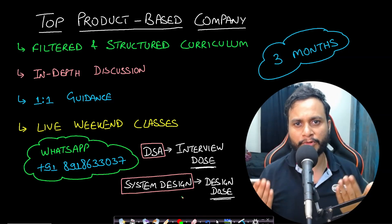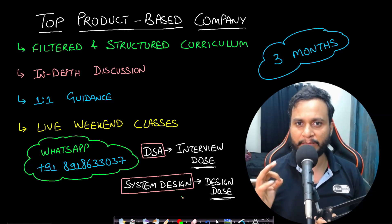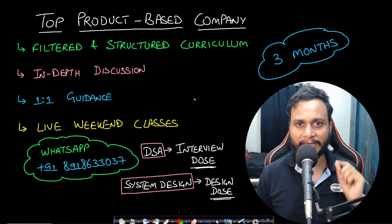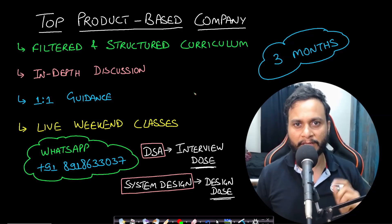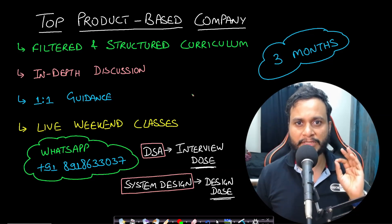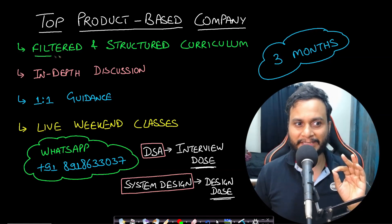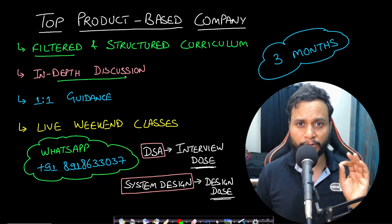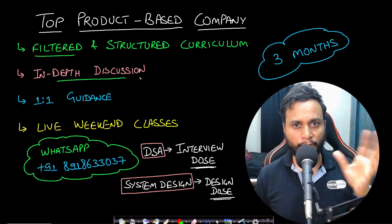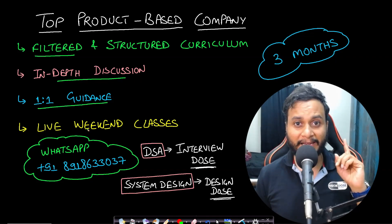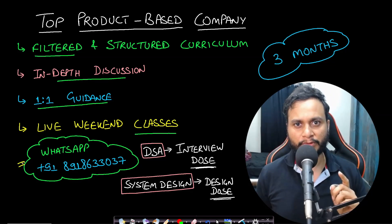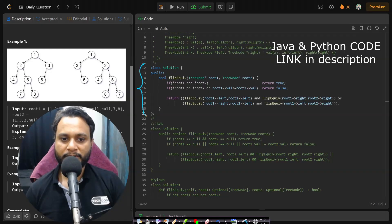If you are looking to prepare for a top product-based company within three months, we have a DSA and system design live interview training program. Key features include a filtered and condensed structured curriculum, in-depth discussion of all topics, one-on-one guidance, and live weekend classes. To know more, WhatsApp us on the given number. The C++ code is shown here; Java and Python will be shared in the description below.